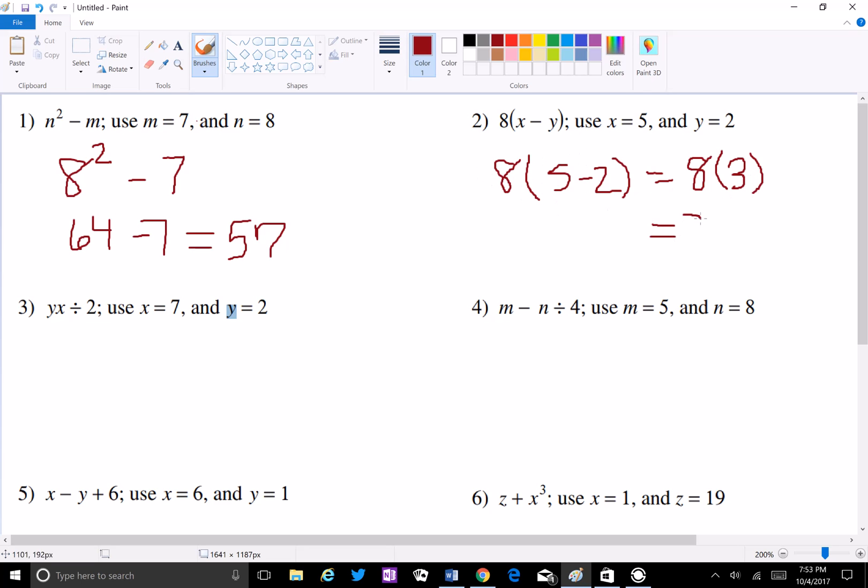And then a little bit harder one is yx divided by 2. You may be wondering, what do I do first? Well, first off you would do 7 times 2 divided by 2, and if your teacher has taught you properly you should know that you go from left to right. So 7 times 2 is 14 divided by 2 which equals 7. If you really wanted to, you could have crossed out the 2s and you would have gotten 7. That's just a little trick if you wanted to.